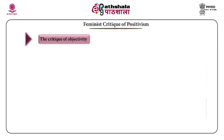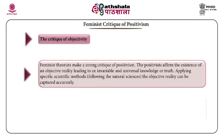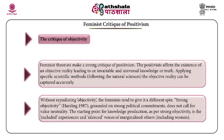On the feminist critique of positivism and the critique of objectivity: feminist theorists make a strong critique of positivism. Positivists affirm the existence of an objective reality leading to an invariable and universal knowledge of truth, and assert that applying specific scientific methods can capture objective reality accurately. Without repudiating objectivity, feminists give it a different spin. Strong objectivity, grounded on strong political commitments, does not call for value neutrality. The starting point for knowledge production under strong objectivity is the excluded experiences and silenced voices of marginalized others, including women.